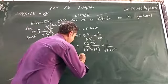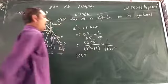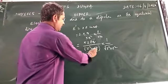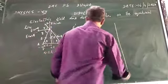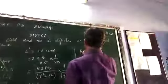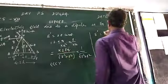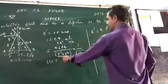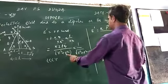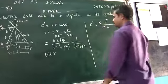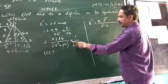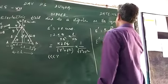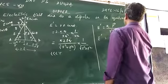Since L is very very small in comparison to R, L squared can be neglected. Putting L² = 0, the result simplifies: E prime = KP divided by R squared times √(R²), which is just R. So the final result is E prime = KP / R³.